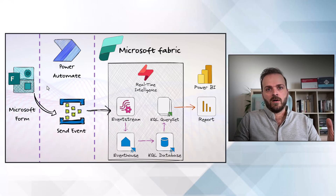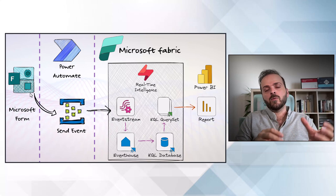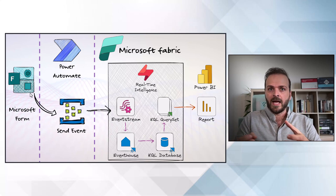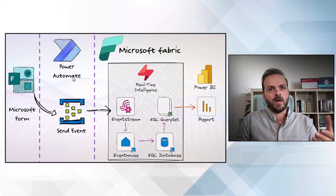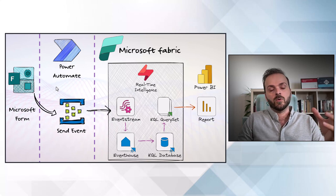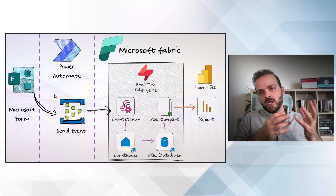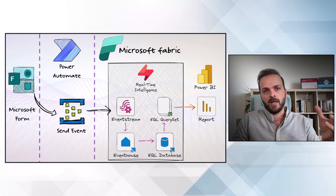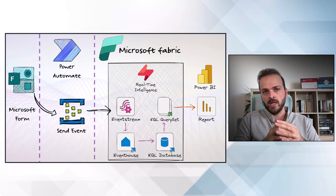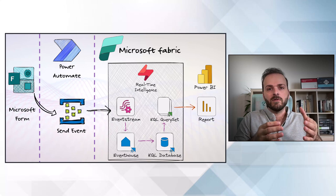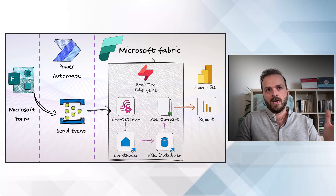Let's review the overall structure of this solution. Imagine we have a Microsoft Form, and when we submit that form, all the responses need to be saved in a KQL database. Then we can analyze that using a Power BI report with direct access to that KQL database. We need to create a Microsoft Power Automate flow to capture the data when any user submits that form, change the format to JSON, and send the event to an event stream. We will create a custom source for that event stream to receive data from Power Automate, then save it to a KQL database and analyze it in Power BI.